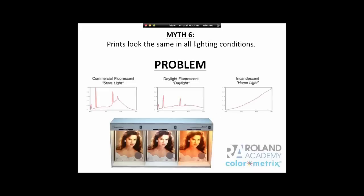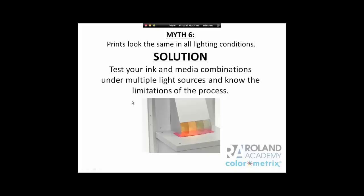Myth six: All prints look the same in all lighting. This light booth shows the exact same print — three copies measured to be exactly the same — but under incandescent lighting, fluorescent office lighting, daylight, and store fluorescent lighting, they look different. Unfortunately, store fluorescent lighting doesn't always match the fluorescent lighting we use to evaluate prints. If you can do testing of your ink and media combinations, work with your ink vendor. All you can do is determine the same ink and media will look different under two light sources and alert your customer before they see it in production.